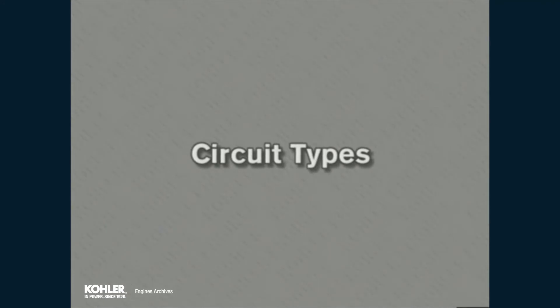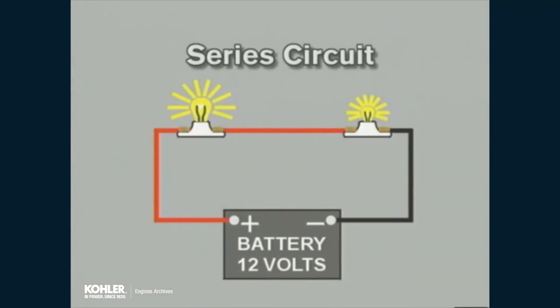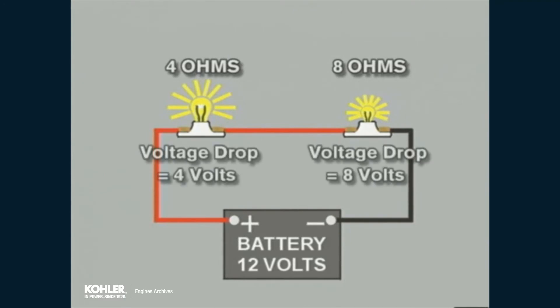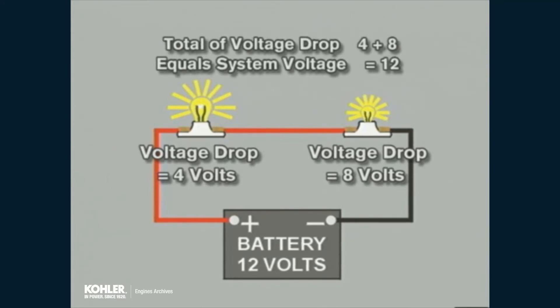There are two basic arrangements of components in a circuit. When a circuit is arranged with loads one after the other with a single current path, the circuit is called a series circuit. The voltage drop through each load is in proportion to its resistance. Higher resistance results in greater voltage drop, since more pressure is required to push current through higher resistance. The total voltage drop from all combined loads is equal to system voltage.